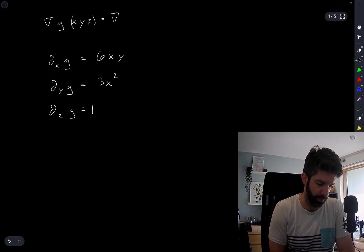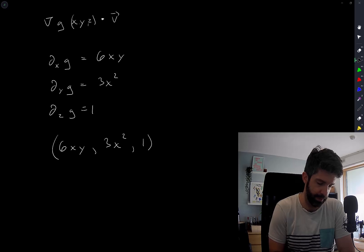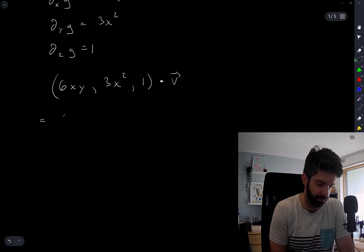So we want to take 6xy, 3x squared, and 1, and take a dot product with our vector v, which in this case is equal to 6xy plus 6x squared plus 3.